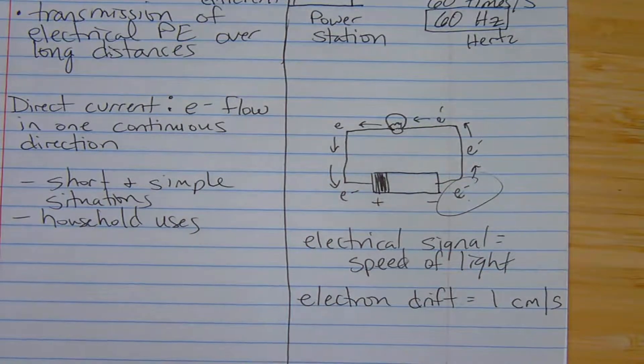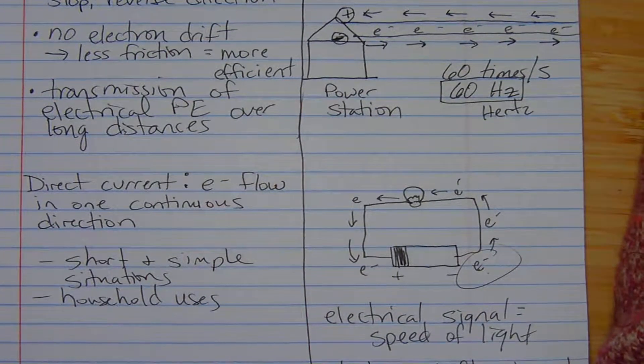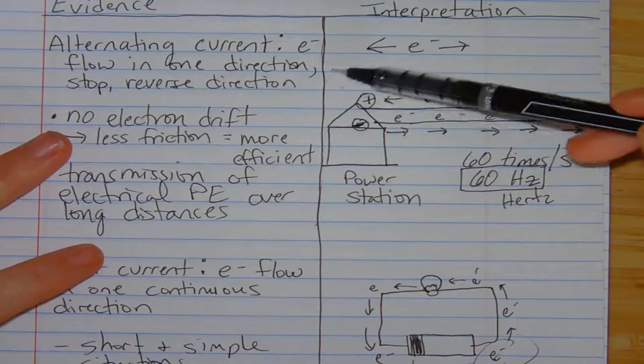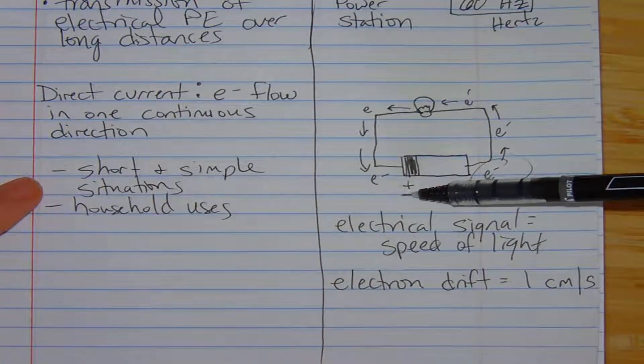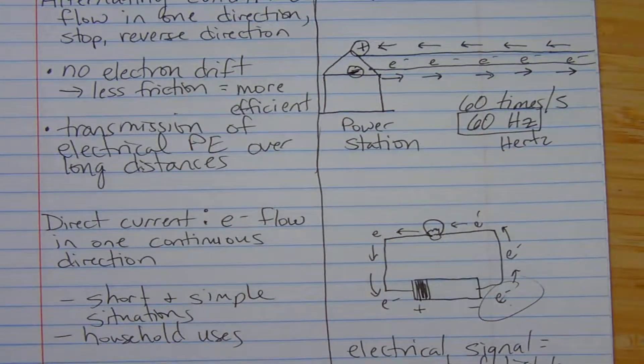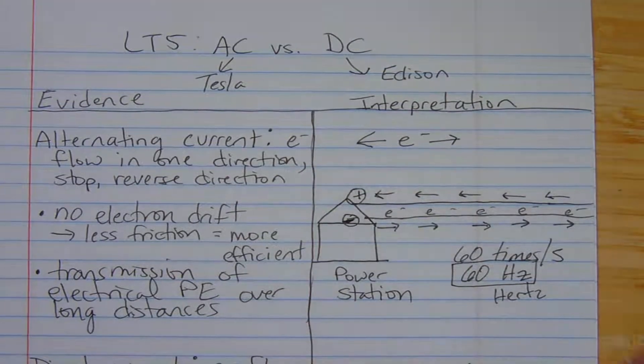So in the perfect world Tesla and Edison would have gotten along. Nobody would have had egos. And they would have worked together to figure out there's great uses for alternating current and there's great uses for direct current. So it just depends on the situation. Each one has its advantage, each one has its disadvantage. That is it, good luck.